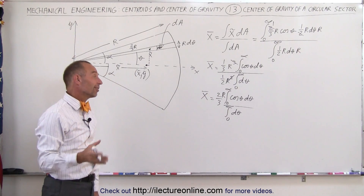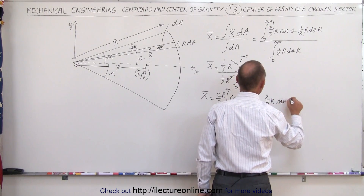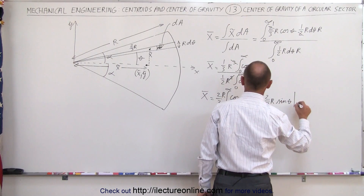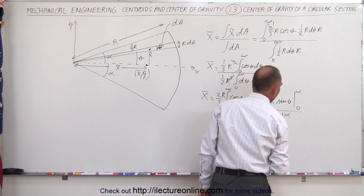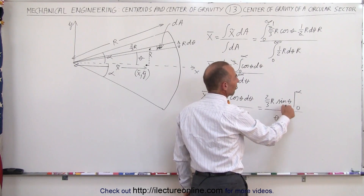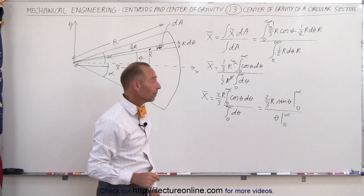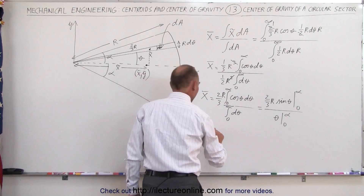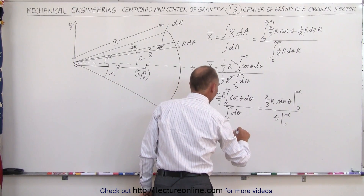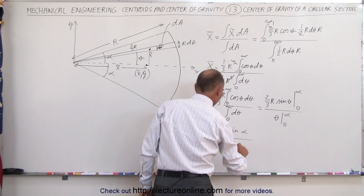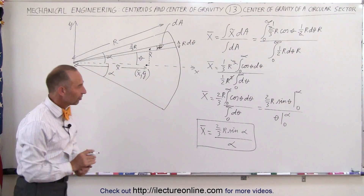Integrating cosine(θ) gives sine(θ). This equals two-thirds r times sine(θ) evaluated from zero to alpha, divided by theta evaluated from zero to alpha. Plugging in the lower limit, sine(0) = 0, so the lower limits contribute nothing — only the upper limits matter. So the x coordinate of the center of mass is equal to two-thirds r times sine(α) divided by alpha.